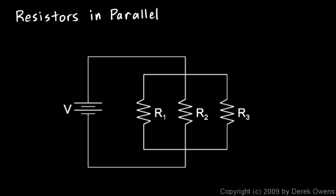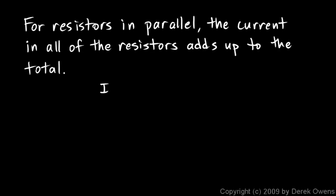If we have current I1 flowing through the first resistor, I2 through the second, and I3 through the third, those three together have to add up to I, the current coming out of the battery. We can write it mathematically as: I = I1 + I2 + I3. This is a specific case involving three resistors, but the concept is true in general — two resistors, four resistors, or more: when you have resistors in parallel, the currents in all of them add up to the total current.